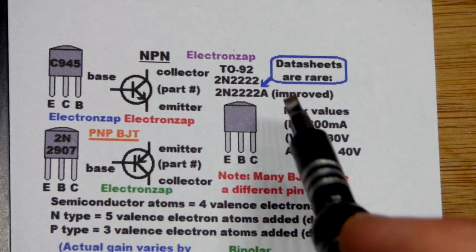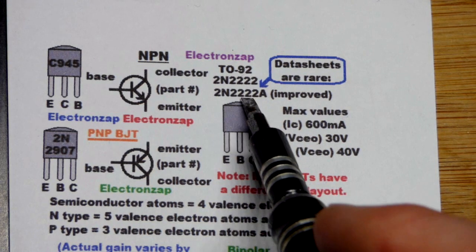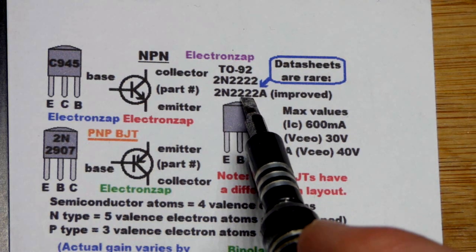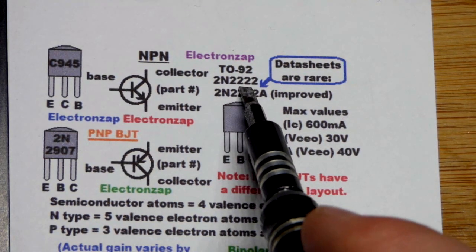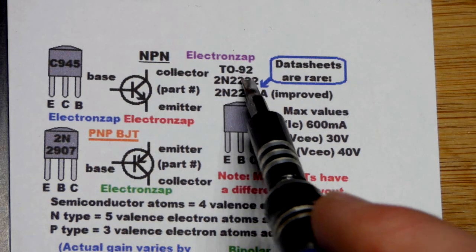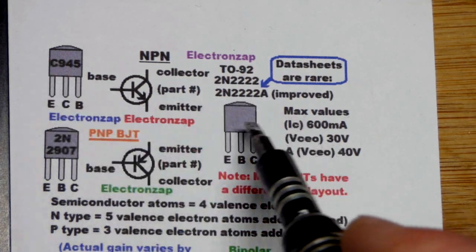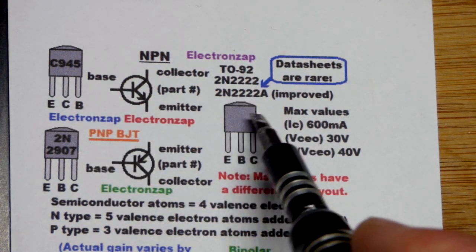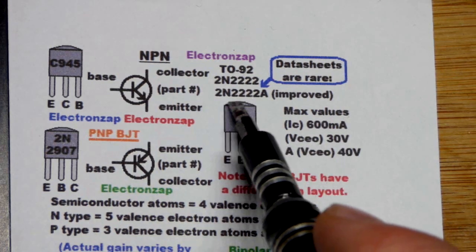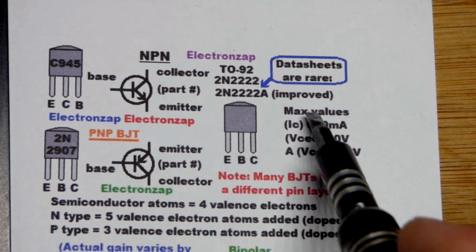You always want to consult the data sheet for the particular component you're using, not go by what I say. But it's kind of hard to find the 2N2222 in T092 package. That's what these look like. And so I got the numbers here for you for that one. And the A at the end is the improved version.